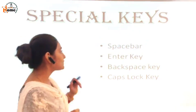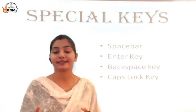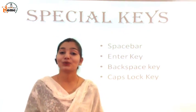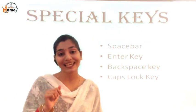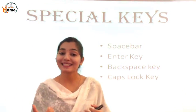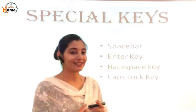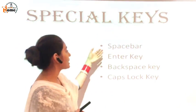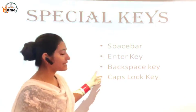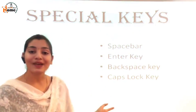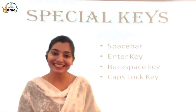Next, we have special keys. What are special keys? They are used to do special tasks. They are used to type special characters like apostrophes and full stop. They are used to give spaces and they do specific tasks. So they are special keys. Which special keys do we have? Space bar — it gives you space. We have the enter key, then the backspace key, and the caps lock key. All these keys are special keys. Now let's learn about these keys in detail.